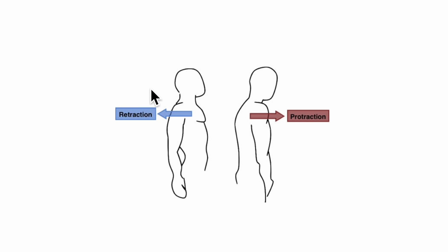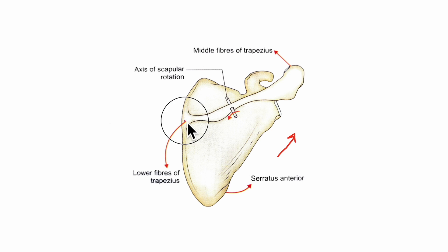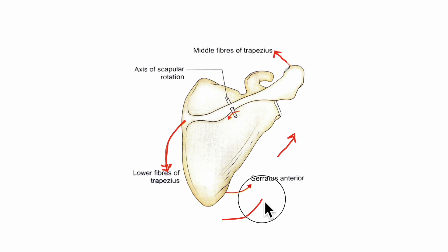The middle fibers of the trapezius retract the scapula. Now the upper and lower fibers of the trapezius together rotate the scapula forwards around the chest — you can see the action of the lower fibers and the middle fibers working together so the scapula rotates forwards around the chest. As a whole, the trapezius muscle steadies the scapula.